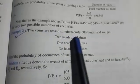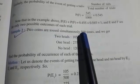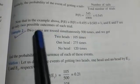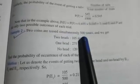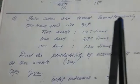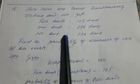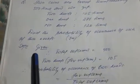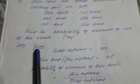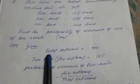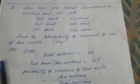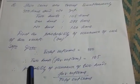Your total outcome is 500 times, because we tossed the coin 500 times. Now let's go to the solution. I have written the question here so you can also write it from your book. Let's go directly to the solution. First you have to write the total outcome, which is 500 — already given in the question.